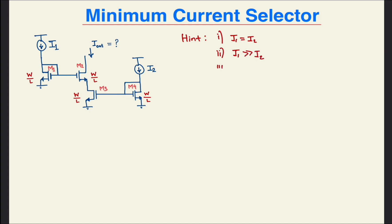In this case, that would be I1 equal to I2, I1 much much greater than I2, and I1 much much smaller than I2.